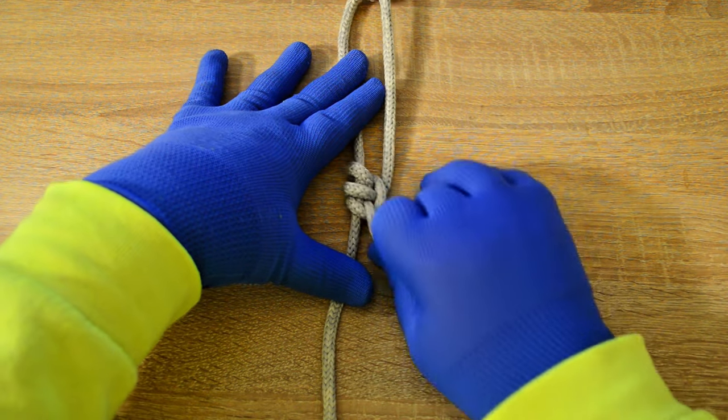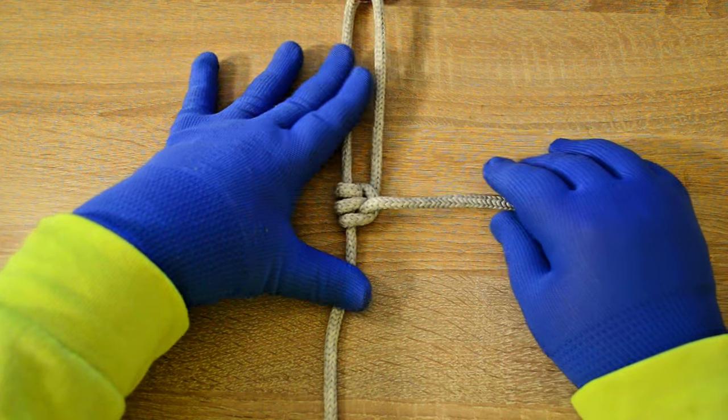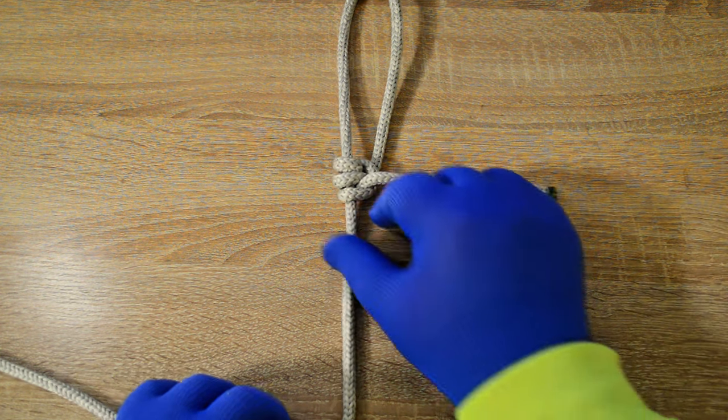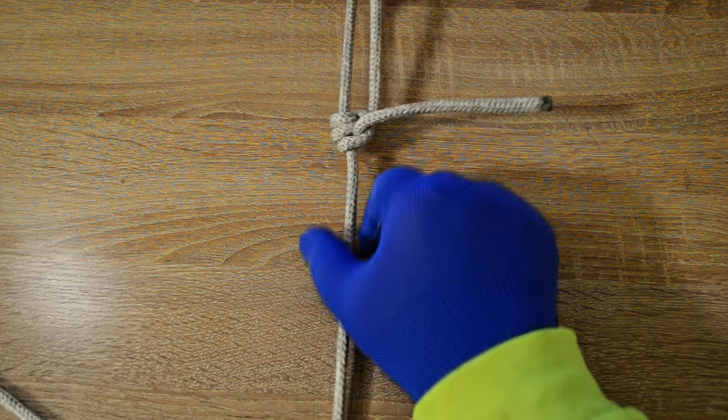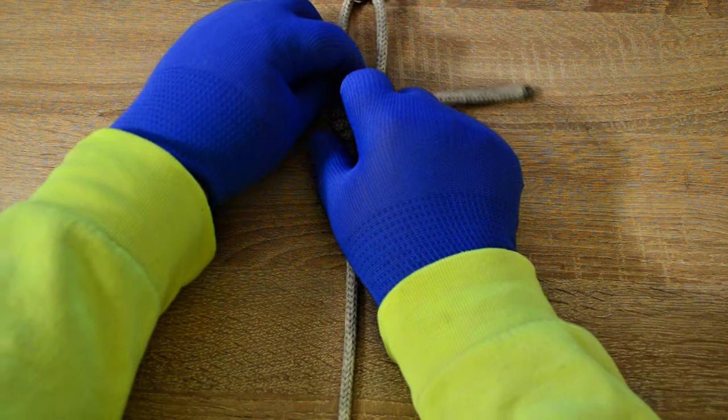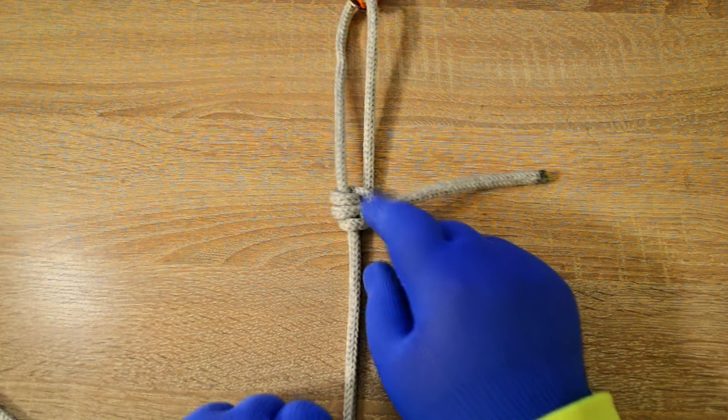This knot is designed to enable you to easily adjust the tension on the rope and works great for adjusting tent guidelines. I should also point out that this knot can be tied a few different ways. This is just one of the most common ways that works well.